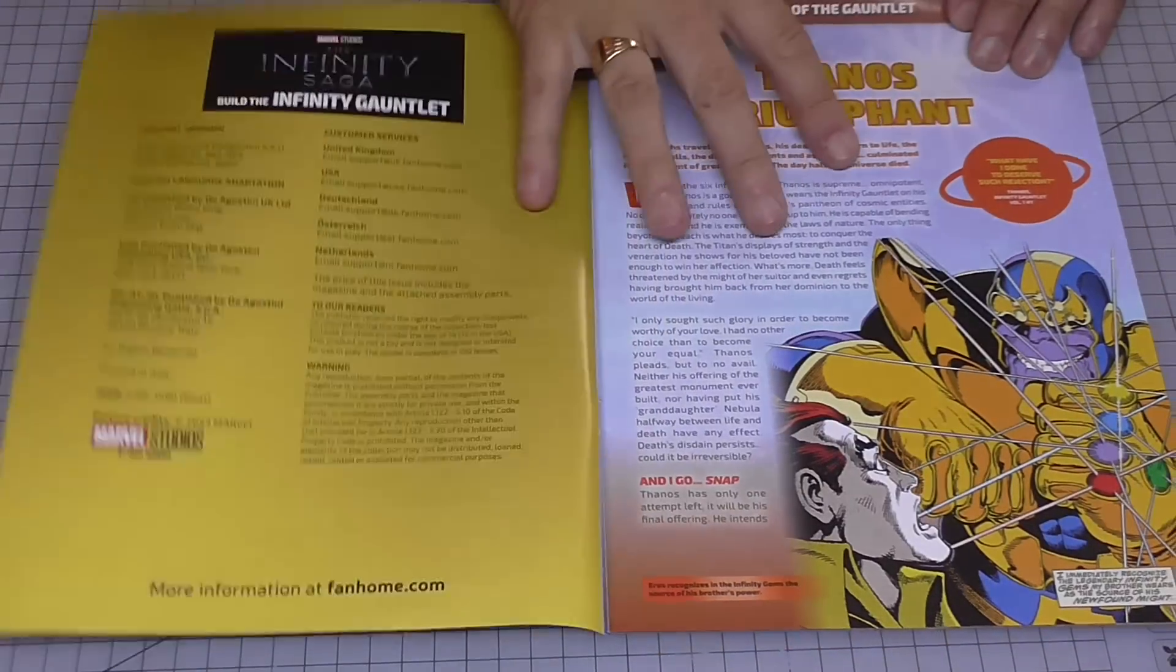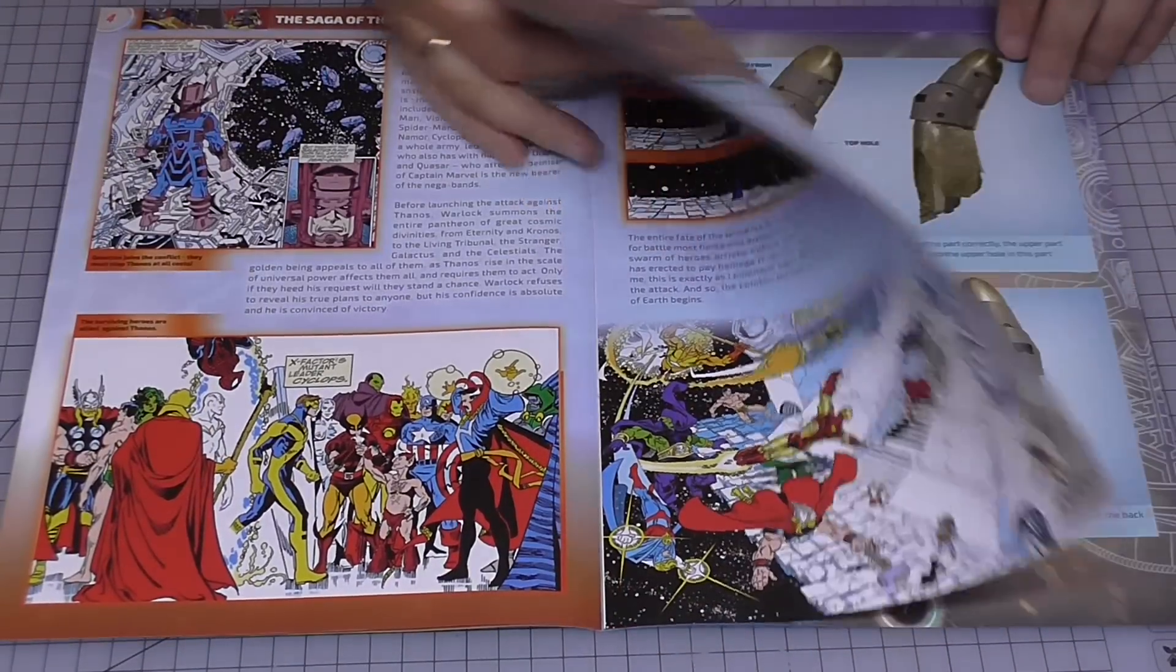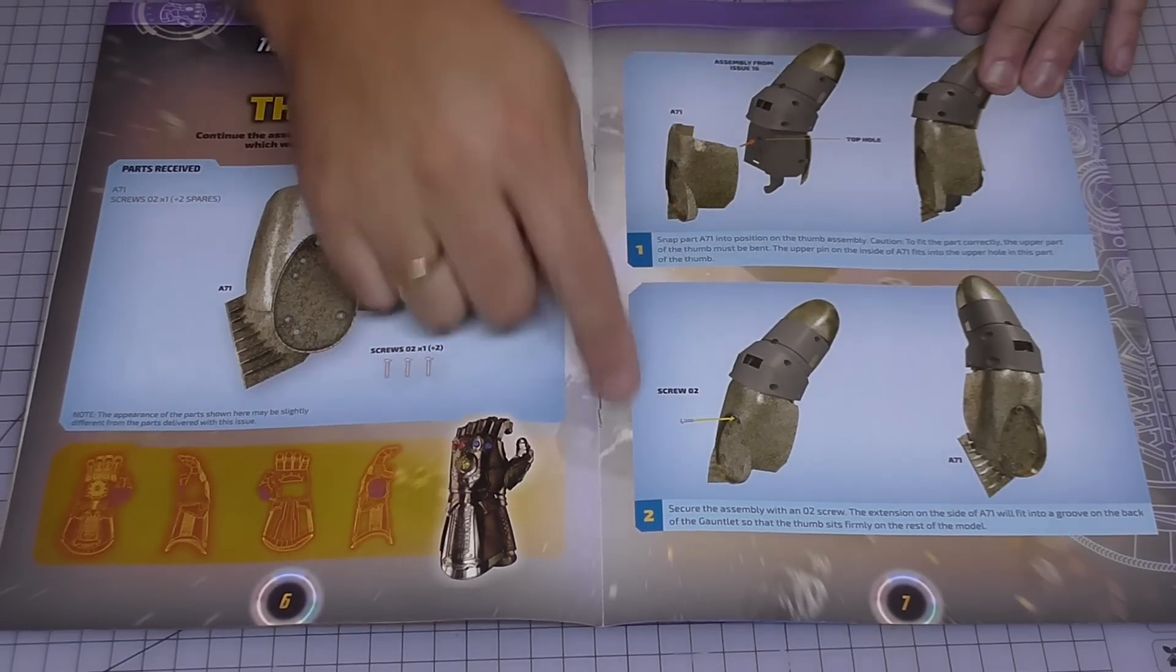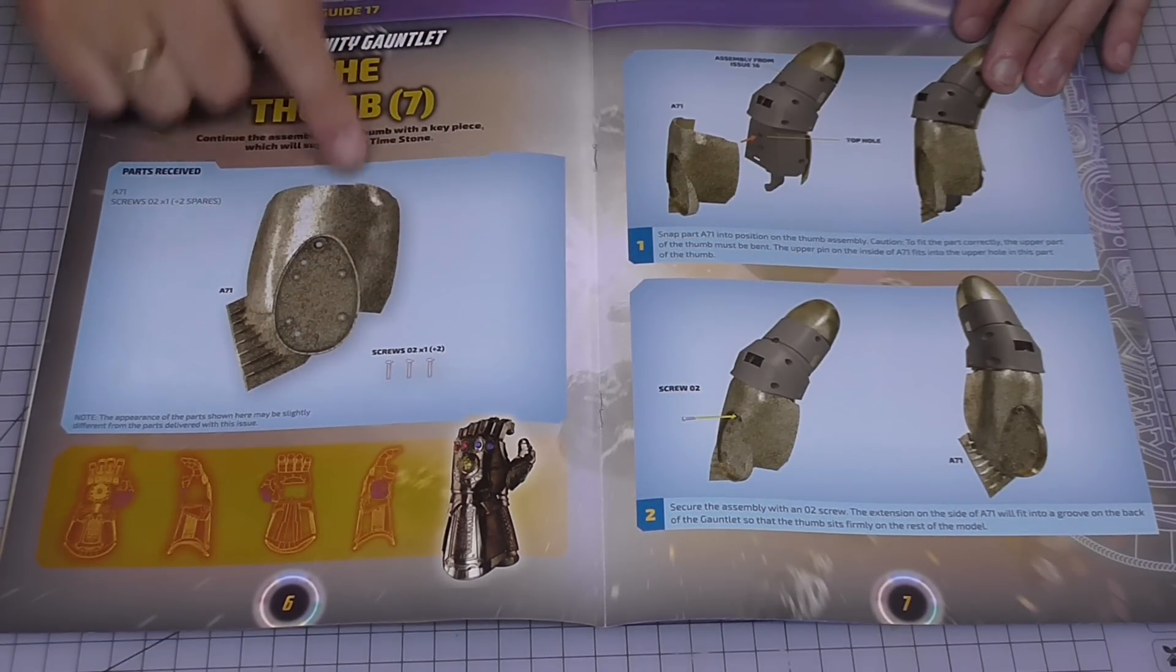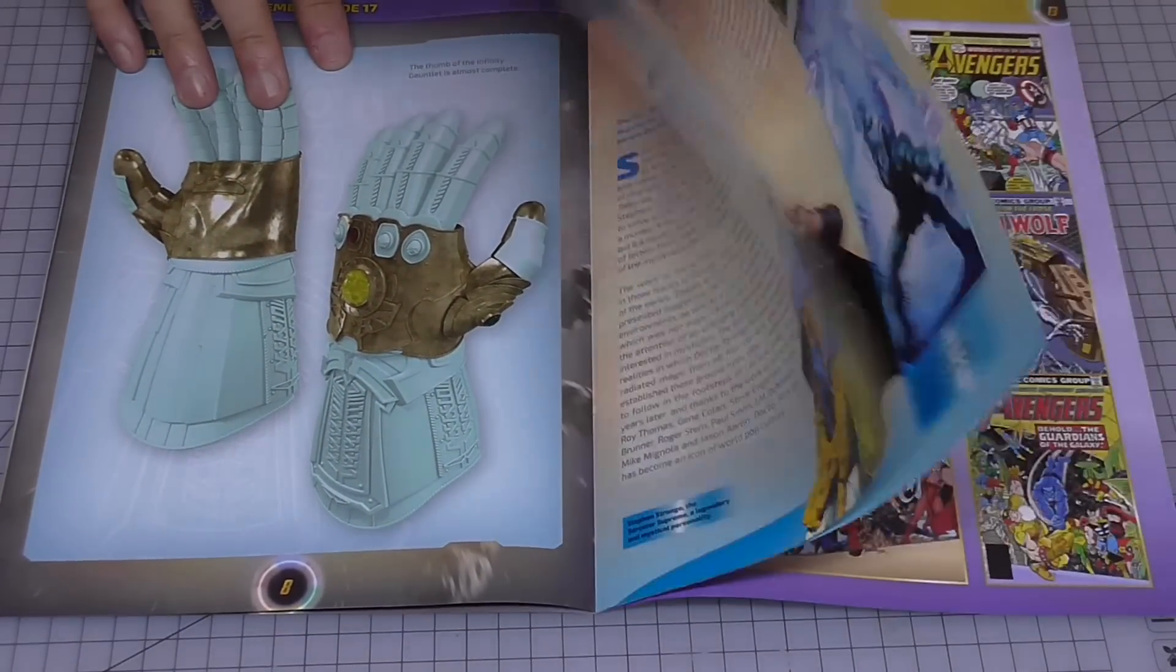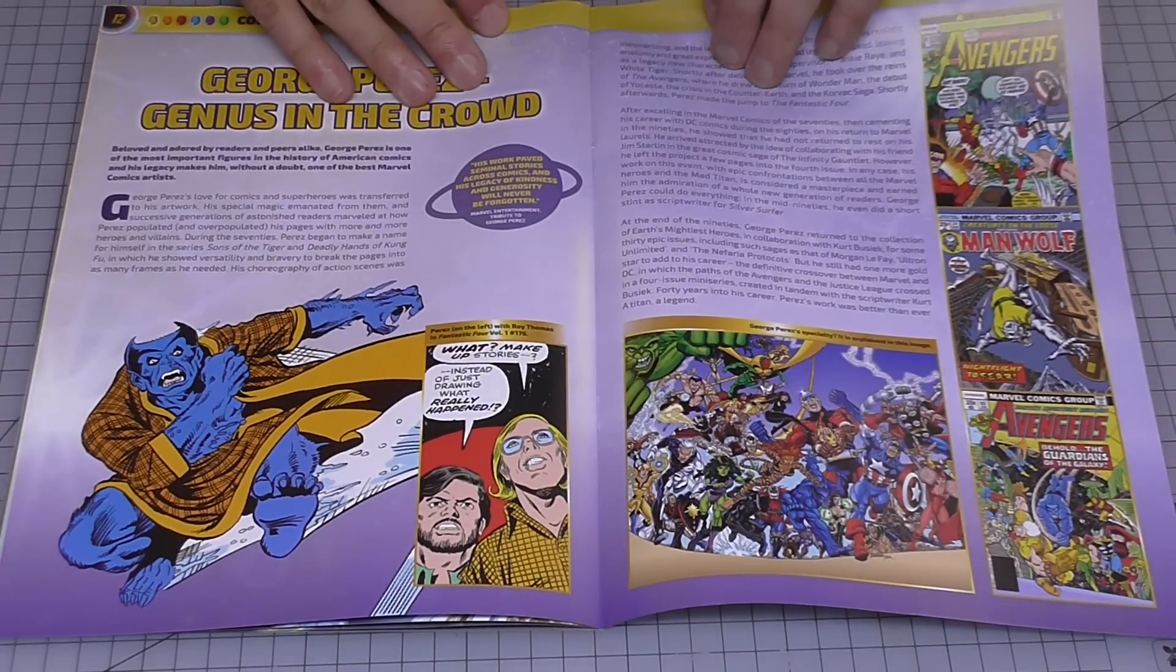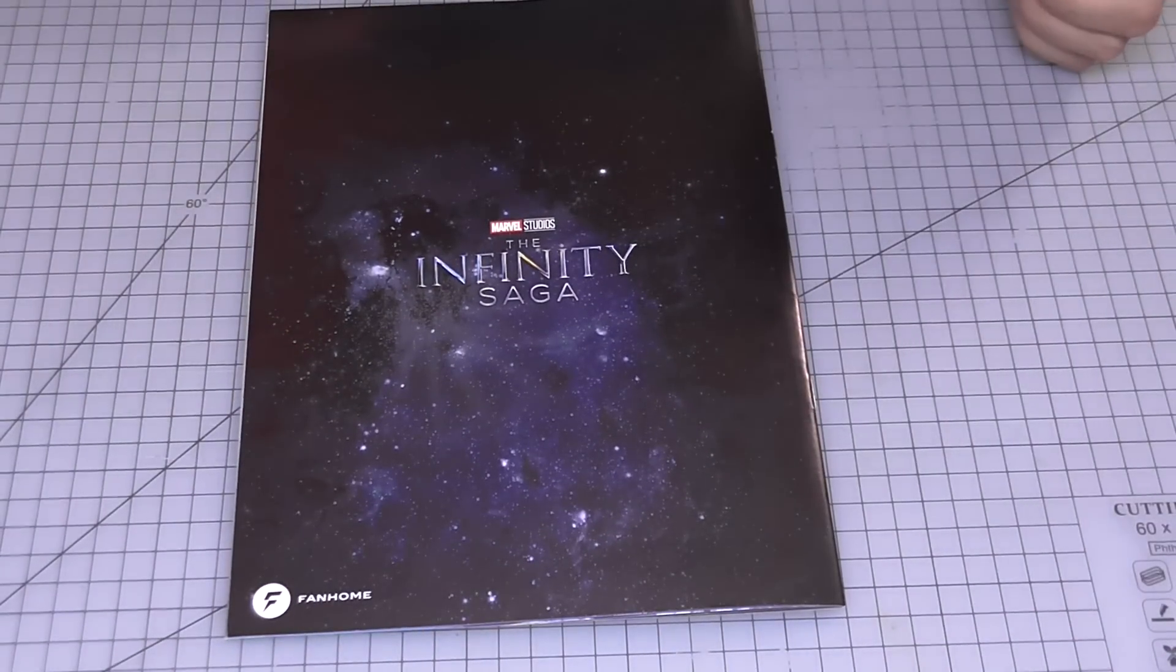So stage 17, this is the magazine. Let's have a flick through. As you can see, we are going to be putting a panel onto the thumb here, just this panel here. I believe that is all we're going to be doing in this stage. This is going to be a nice quick stage. You can see what I mean about how big these magazines are. These are collection items in themselves.